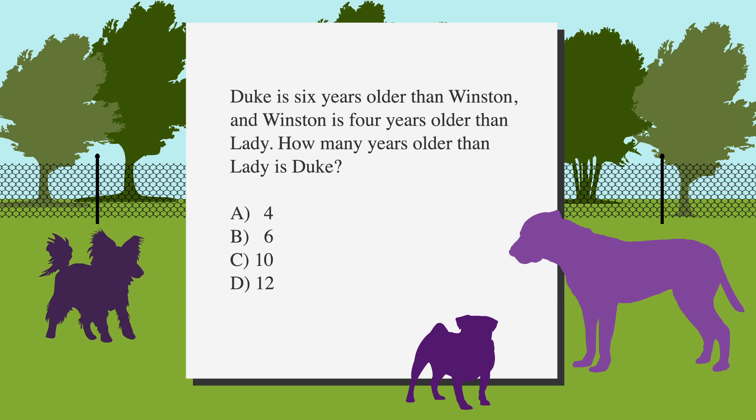Duke is six years older than Winston, and Winston is four years older than Lady. How many years older than Lady is Duke? The answer choices are A, 4, B, 6, C, 10, and D, 12.